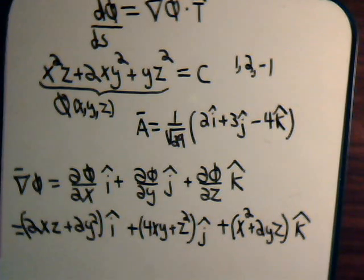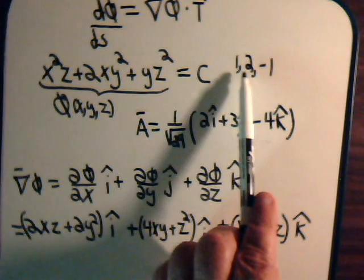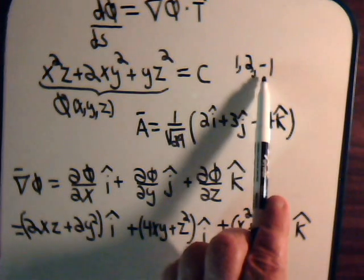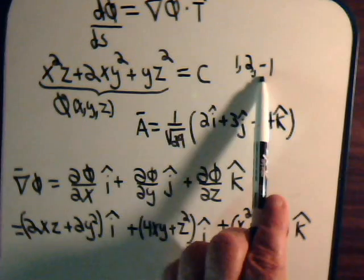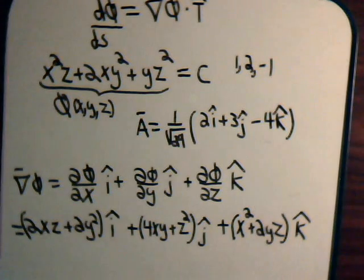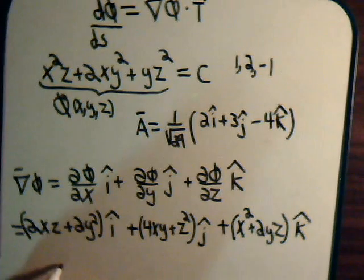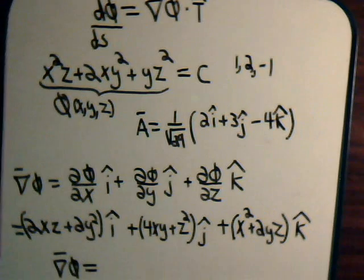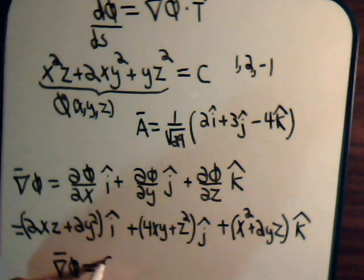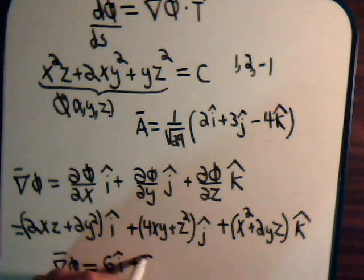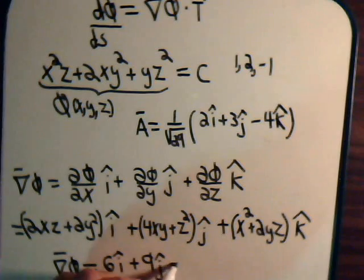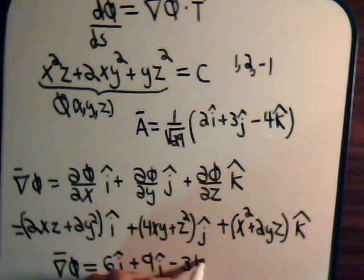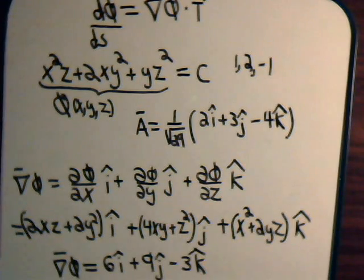We need to evaluate this when x equals 1, y equals 2, z equals minus 1. So we plug those numbers into here, and the expression that we get is this is equal to 6i plus 9j minus 3k. And what do we want to do with this?